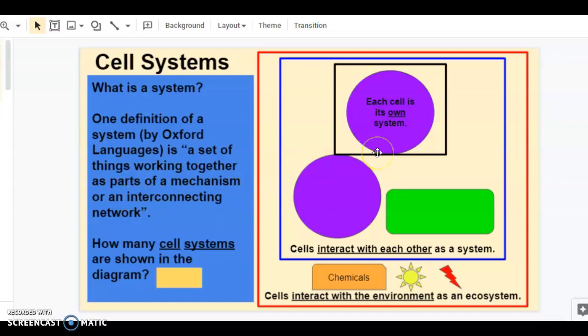Cells are parts of lots of systems. First, each cell is its own system. The organelles, the cell structures, the biochemistry all work together as parts of a mechanism, allowing the cell to survive. Next, cells interact with other cells, whether they are cells of the same type or different types. So they are part of a bigger cell system.